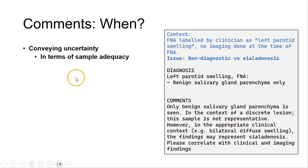So here is the diagnosis line. And the comment needs to convey our uncertainty in terms of the adequacy. So only benign salivary gland parenchyma is seen in the context of a discrete lesion. The sample is not representative. However, in the appropriate clinical context, the findings may represent sialadenosis. Please correlate with clinical and imaging findings.